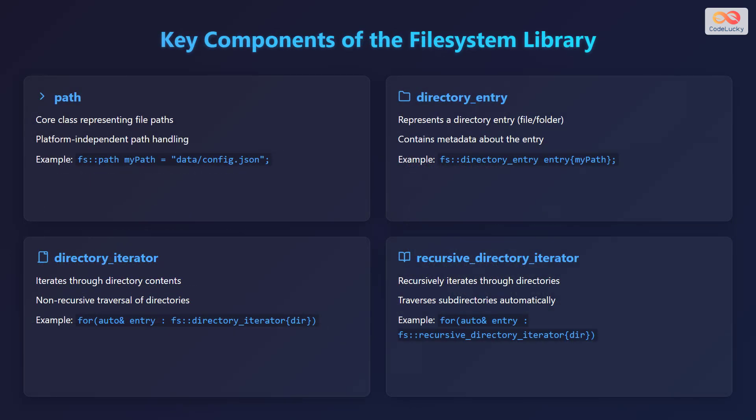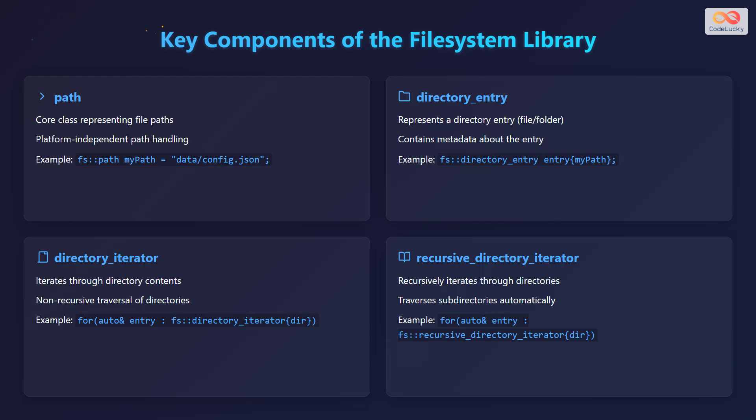Let's discuss the key components of the File System Library. The first component is path — the core class representing file paths, providing platform-independent path handling. For example, you can declare a path like: fs::path mypath = "data/config.json". The second component is directory_entry, which represents a directory entry such as a file or folder and contains metadata about that entry. For example: fs::directory_entry entry{mypath}.